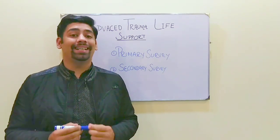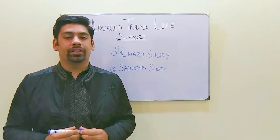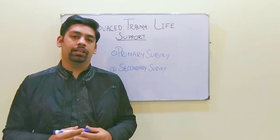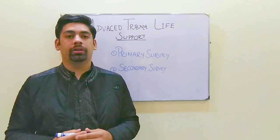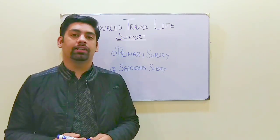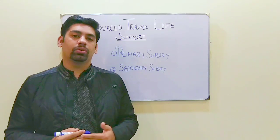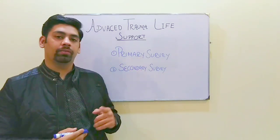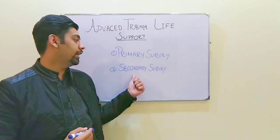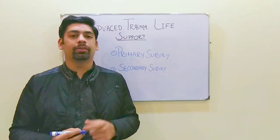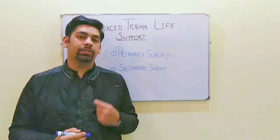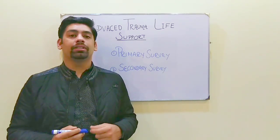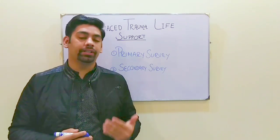The Advanced Trauma Life Support, or the ATLS protocol, is initiated after a traumatic injury to a person. The person either presents in the emergency department or the doctor assesses the patient at the site. The ATLS protocol consists of two different surveys: the first is known as the primary survey or the initial survey, and the second is known as the secondary survey. The purpose of the primary survey is to identify the components which are killing the patient or which are hampering his life condition.